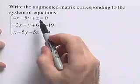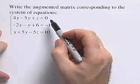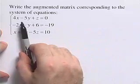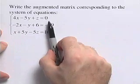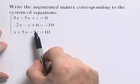For this problem, we want to write the augmented matrix that corresponds to the given system of equations. Before we write the augmented matrix, we first want to make sure that all our equations are in standard form. That is, we want all the variables to the left side of the equation, and we want the constants on the right side. We also want to make sure that all our variables are lined up.